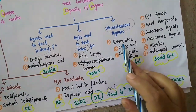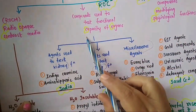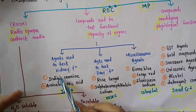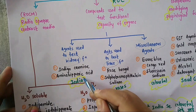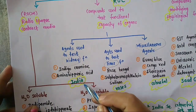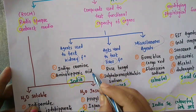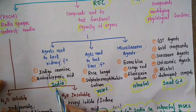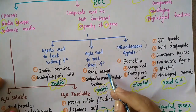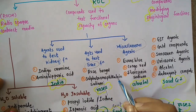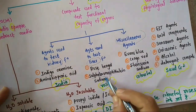In the mnemonic, 'India' is for kidney function test. 'Indi' is indigo carmine and 'A' is for amino hippuric acid. 'Roses' is for liver function: 'Rose' is rose bengal and 'S' is for sulfobromophthalein sodium.